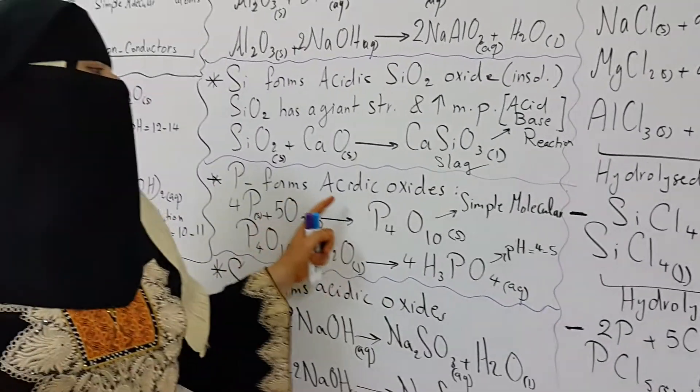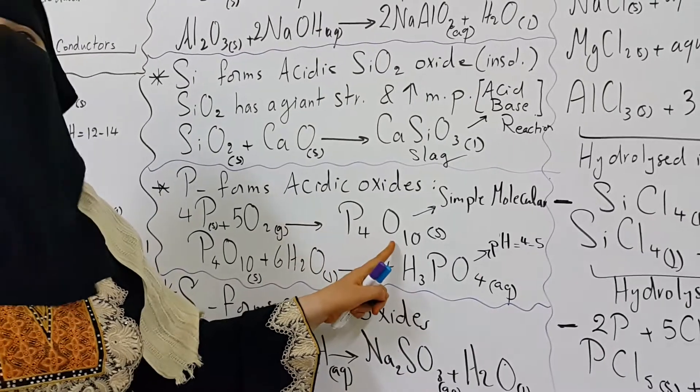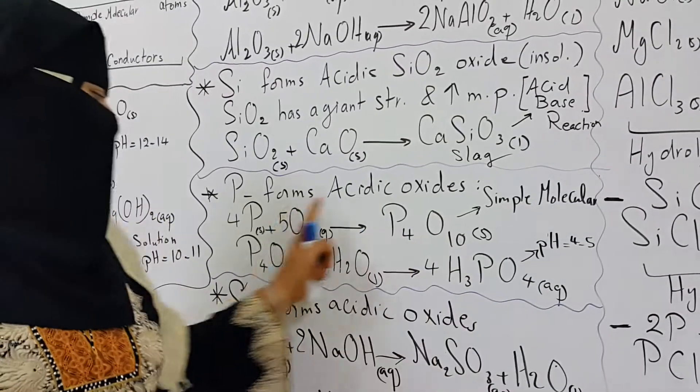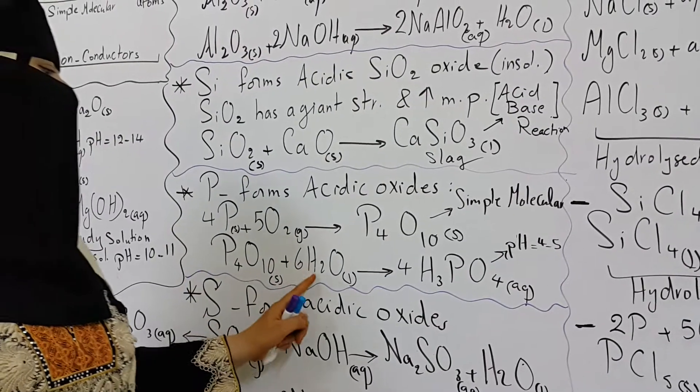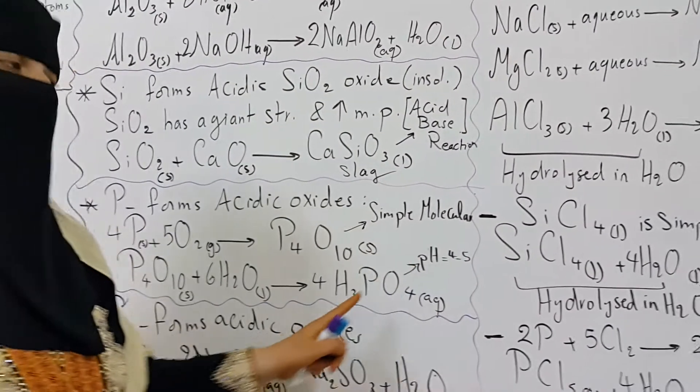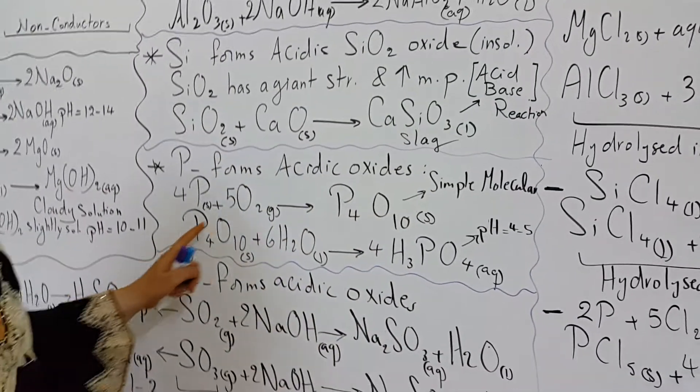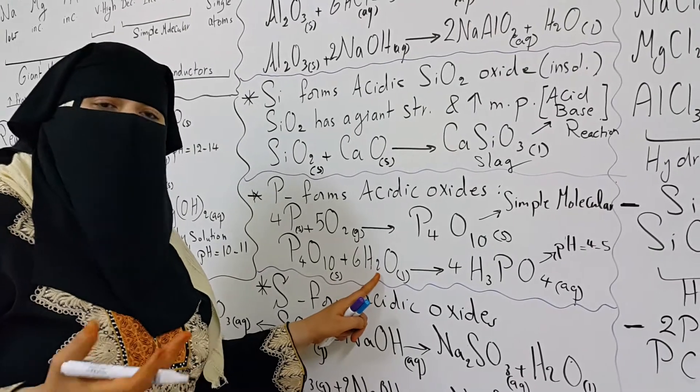Now phosphorus forms an acidic oxide. With oxygen, it reacts to form P4O10, a form of phosphorus oxide. This oxide can be hydrolyzed in water to form an acidic solution of phosphoric acid of pH 4 to 5. Remember, it hydrolyzes in water. Hydrolyzes means reaction with water to form a new product.